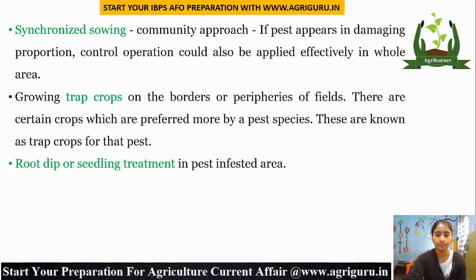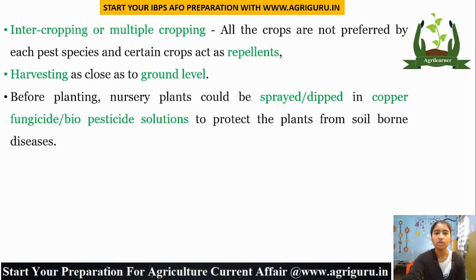Root dip or seedling treatment in pest-infested areas. Intercropping or multiple cropping — not all crops are preferred by each pest species, and certain crops act as repellents, which in turn reduces pest incidence. Harvesting as close to ground level as possible helps break the life cycle of pests. Before planting, nursery plants can be sprayed or dipped in copper fungicide or biopesticide solution to protect plants from soil-borne diseases.